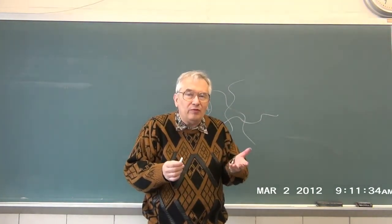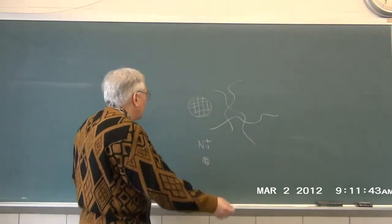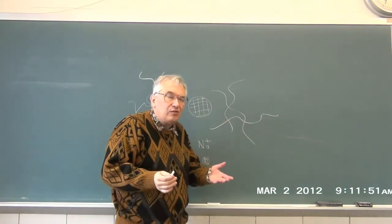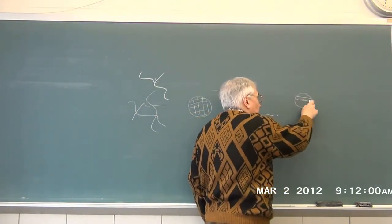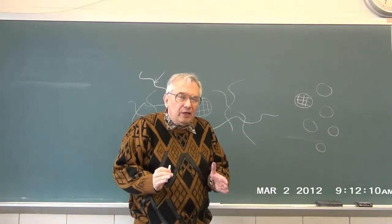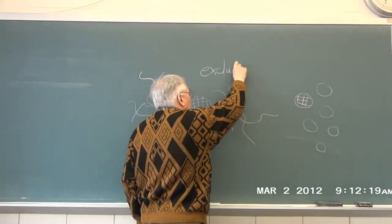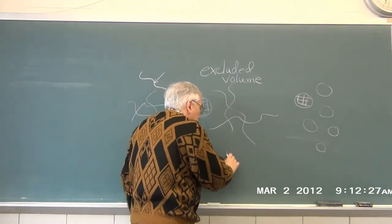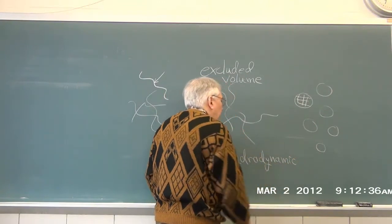Why would probe diffusion be an interesting technique? On one hand, something we talked about in the last chapter: we have tracer and self-diffusion, in which the probe object is a random coil polymer just like the matrix polymers. On the other hand, in a future chapter, we could imagine the same probe particles diffusing through a colloid solution. In all three cases, the basic forces involved are the same: excluded volume forces, and hydrodynamic interactions.